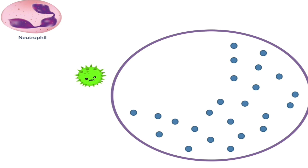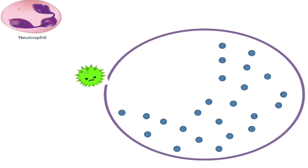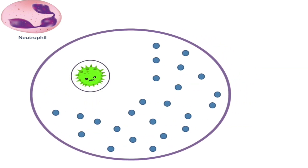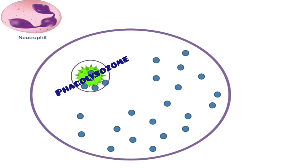If a neutrophil finds a pathogen, it performs phagocytosis and engulfs the pathogen inside it, surrounding it with a vesicle so it ends up in a phagosome. Neutrophil has two ways to kill this pathogen: the first is by its cytoplasmic granules, and the second is by the oxidative burst process. The granules fuse with the phagosome to form a phagolysosome — the granules contain molecules that lower the pH, making it very acidic.